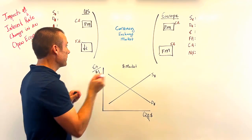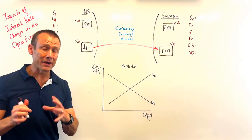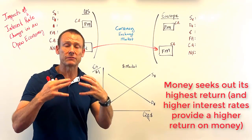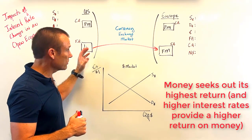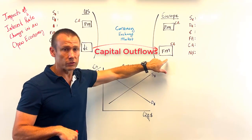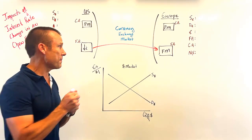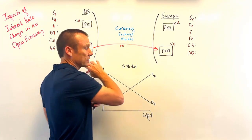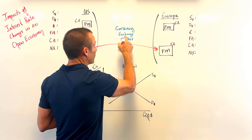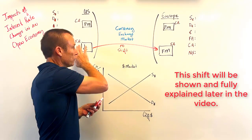When interest rates go down, the first thing to think about is that money is going to flow away from US financial markets. Money goes to higher interest rates, and now interest rates over in Europe are relatively higher. So when that interest rate goes down in the United States, we see capital outflows from the US to other countries, including Europe's financial markets. This is the initiating shift in our currency market.